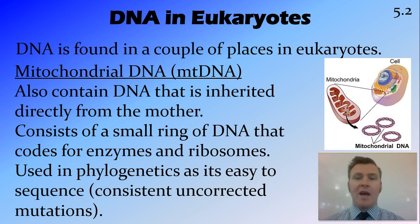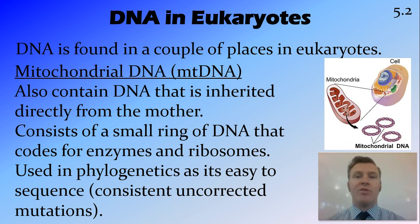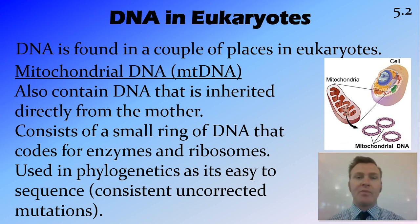As well as in the nucleus, we also have DNA in our mitochondria. It's not as much DNA as in the nucleus, and rather than being in chromosomes, it's found in small rings — still double helix, but this double helix is in a ring. It only codes for a few proteins, mainly the proteins involved in producing enzymes used in the mitochondria, as well as producing the proteins that make up ribosomes.